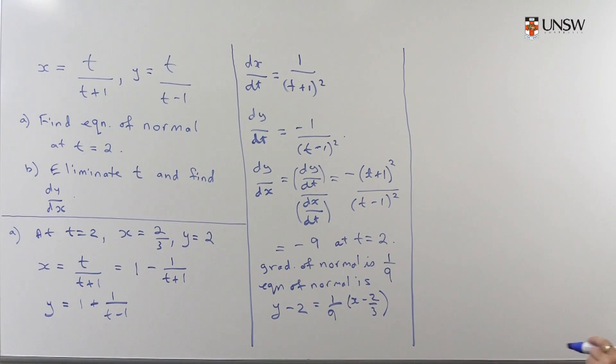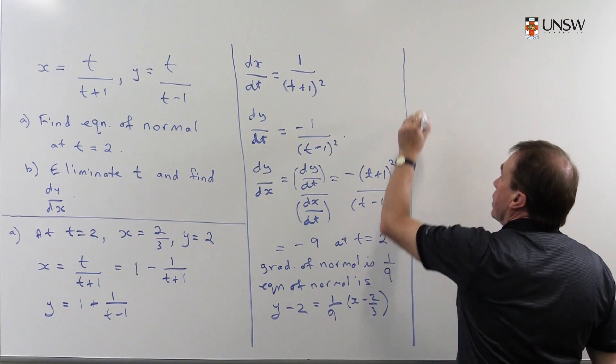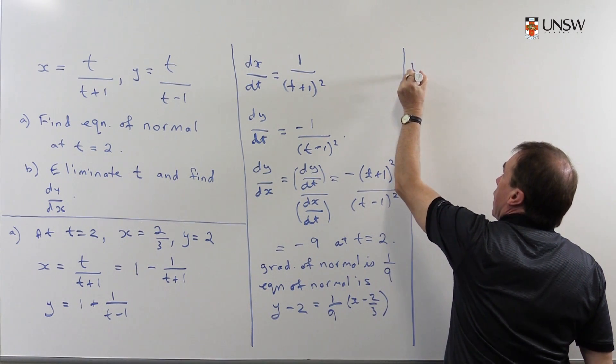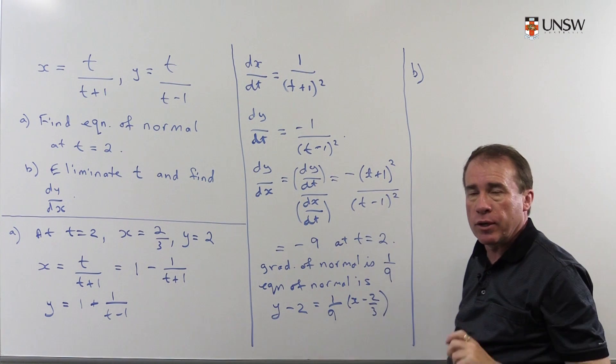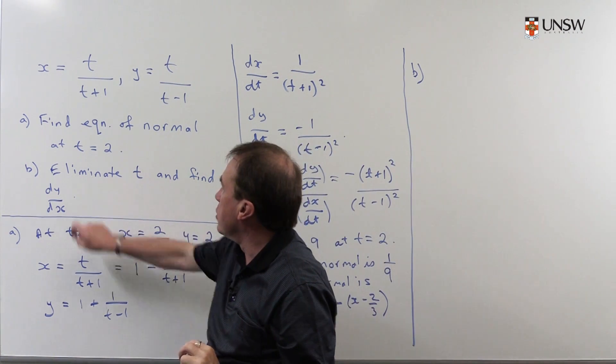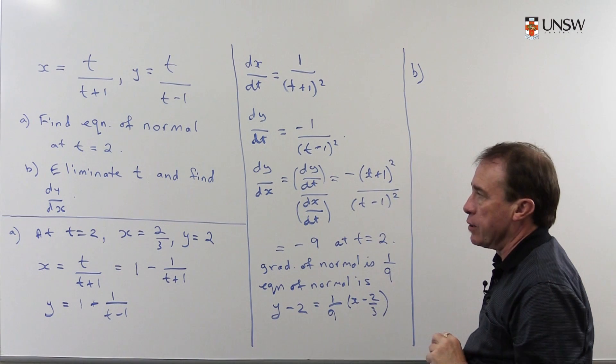So for part b then, I'm going to eliminate t from this and find the derivative, dy/dx. Here we found dy/dx parametrically in terms of t, and I want to find it just in terms of x and y by eliminating t.